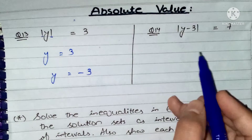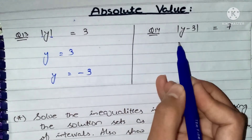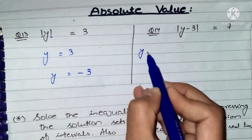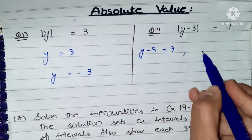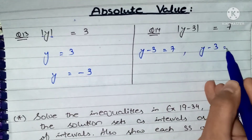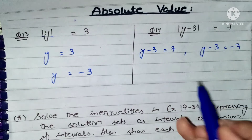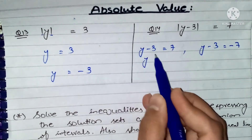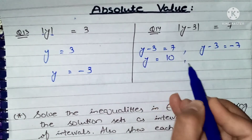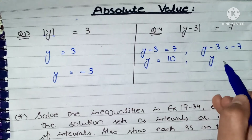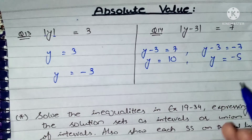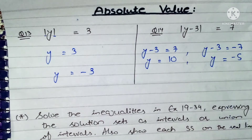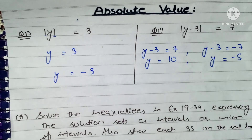If we look at question number 14, when we open the Mod, Y minus 3 equals positive 7, and also Y minus 3 equals minus 7. So when you solve it, you have 7 plus 3, which becomes 10. And Y equals minus 7 plus 3, which becomes minus 5. So you have two values of Y. From question number 13, you will learn how to find out the mod.